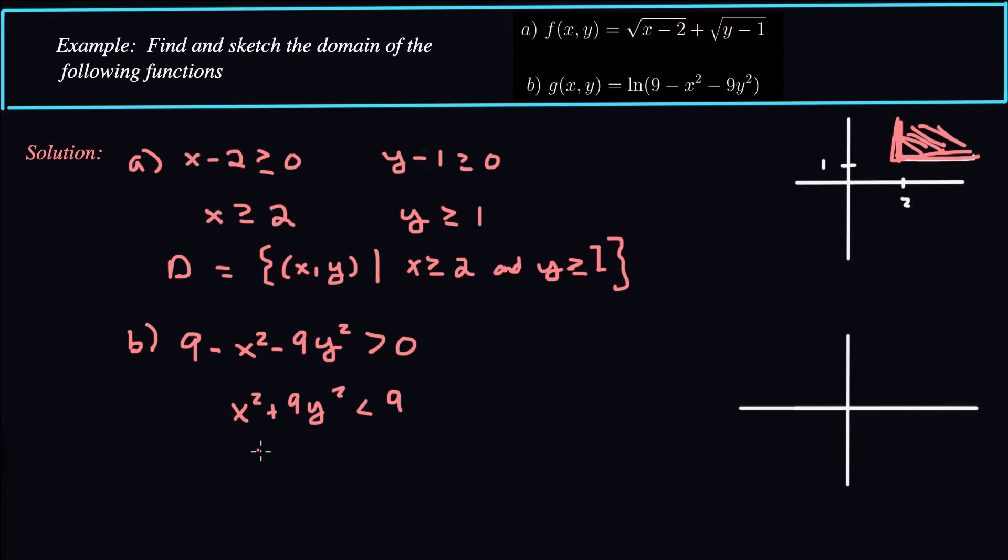Now divide through by 9 because we kind of get the impression that this is somewhat of an ellipse. So this is actually x squared over 9 plus y squared should be less than 1. So actually that does turn out to be an ellipse equation, except we have to be inside the ellipse basically.